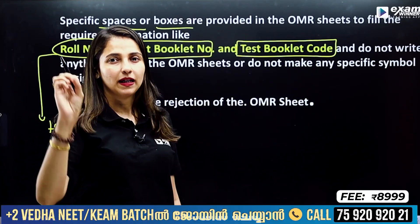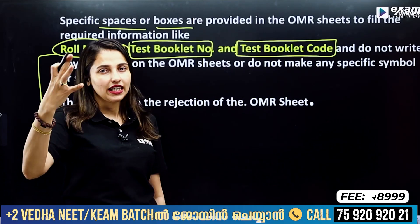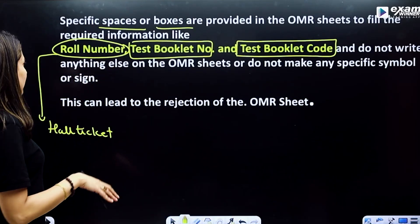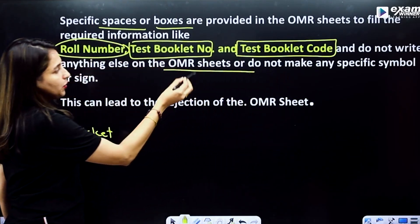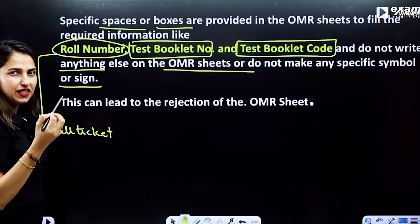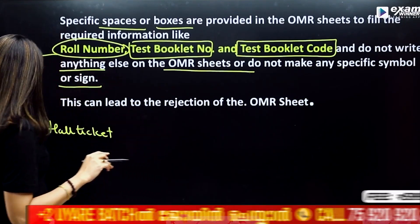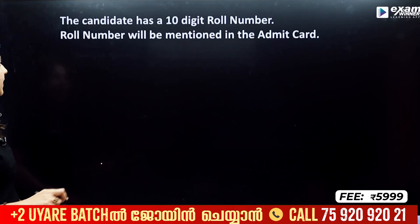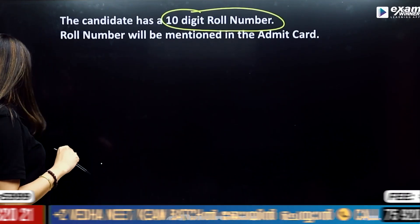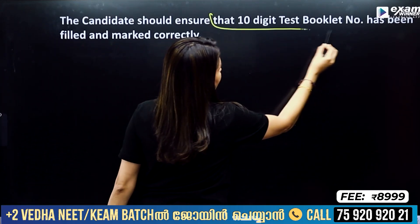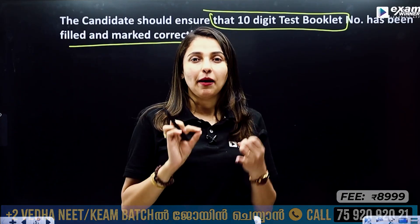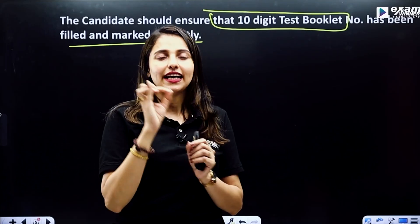If you have a question paper, note the booklet number and code, and ensure that the invigilator confirms it is correct. Do not make any specific symbol or sign on the OMR sheet. If you have any specific sign or symbol or other things, you can get the paper rejected. The candidate must have a 10-digit roll number from their hall ticket, and should ensure that the test booklet number has been filled and marked correctly.